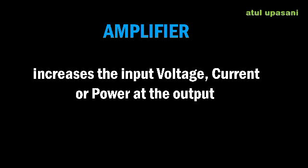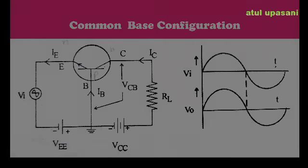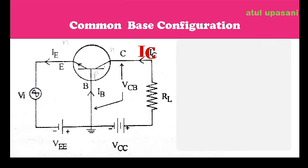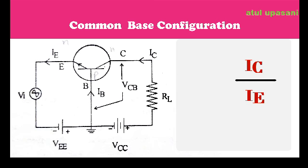Amplification is the process of increasing the voltage, current, or power of an input signal. If we take the current amplification factor of a common base amplifier, the output current is the collector current and the input current is the emitter current. The ratio IC to IE is known as alpha, the current amplification factor in the common base configuration.